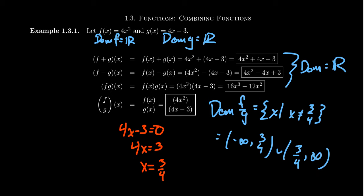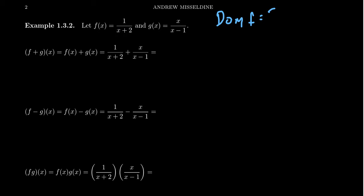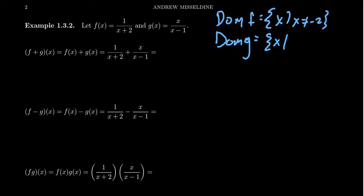Let's turn up the heat a little bit. What if the two functions are algebraic fractions — rational functions? Let f(x) = 1/(x+2) and g(x) = x/(x-1). The domains of these are not all real numbers. For f, the denominator x+2 cannot be zero, so x cannot equal -2. For g, the denominator x-1 cannot be zero, so x cannot equal 1. We can identify those domains very quickly.